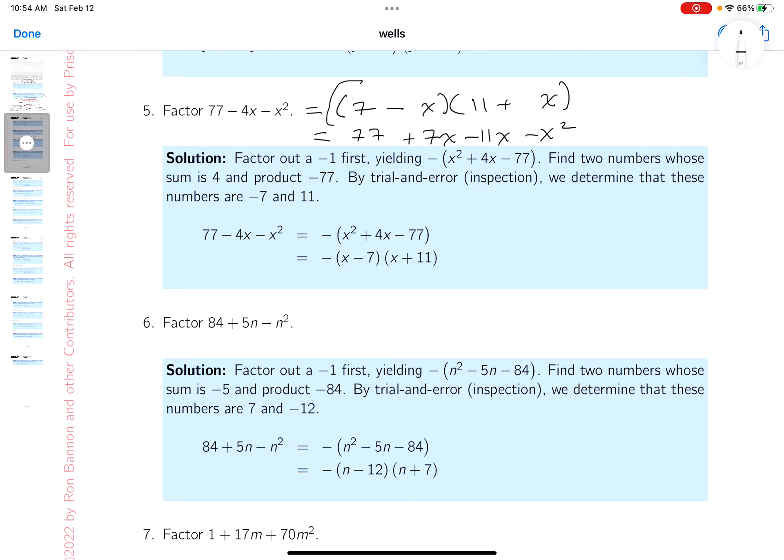Does that work? It does. You get 77, and if you took 7x minus 11, you get minus 4x, and you get minus x squared. So this is an answer. Again, don't think one way is better than another, it's your way of going about the problem.